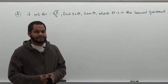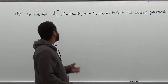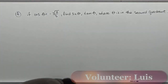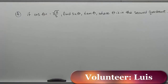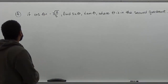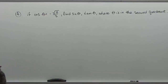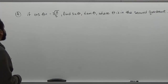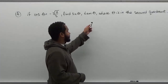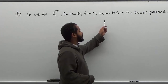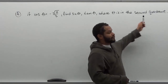Welcome to HelpYourMath.com. Today we're going to do problem number four in the final review for the MAT206.5 class. In this problem, if cosine of theta equals negative radical two over three, find sine of theta and tangent of theta, where theta is in the second quadrant.